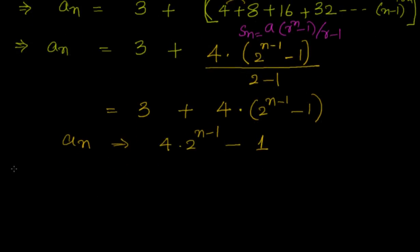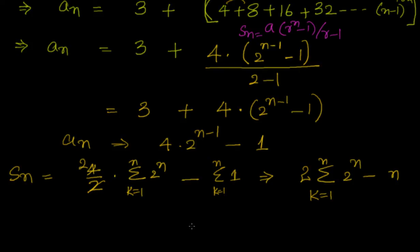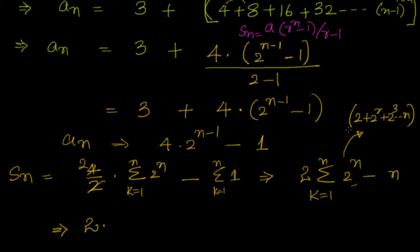Sₙ = Σ aₖ = Σ (4·2ⁿ⁻¹ − 1). We rewrite 2ⁿ⁻¹ as 2ⁿ/2, so Sₙ = (4/2)·Σ 2ⁿ − Σ 1 = 2·Σ 2ⁿ − n, where the sigma runs from k = 1 to n. The term Σ 2ⁿ is a geometric progression: 2 + 4 + 8 + ... up to n terms.